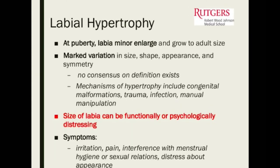Another way patients come in with pelvic or external discomfort is labial hypertrophy. At puberty, the labia enlarge and grow to adult size, with marked variation in what's normal in terms of size, shape, appearance, and symmetry. But sometimes the labia just grow too much and can be functionally or physiologically distressing — patients feel their labia gets caught in their underwear, can't insert tampons comfortably, or it interferes with their ability to have sex.